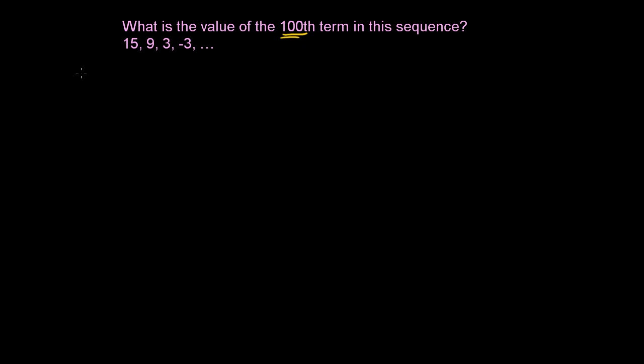So let's write it like this in a table. So if we have the term and then we have the value of the term. I'll do a nice little table here. So our first term we saw is 15, our second term is 9, our third term is 3. I'm just really copying this down, but I'm making sure we associate it with the right term. And then our fourth term is negative 3.